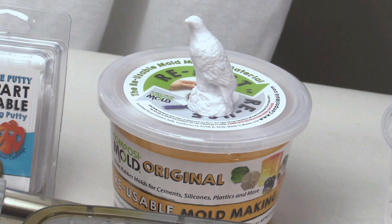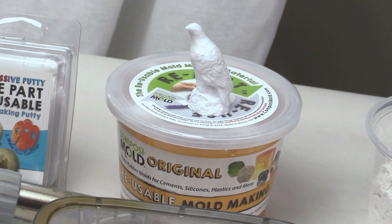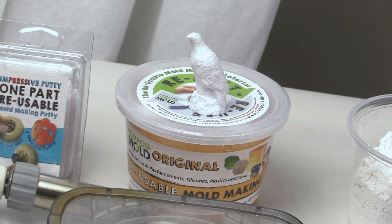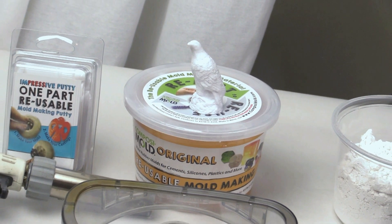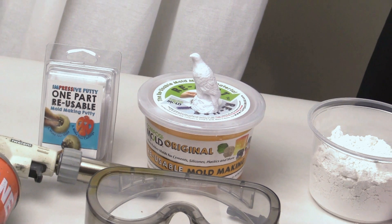The ComposiMold is a heat and pour mold making material that will pick up great details simply by pouring it around your object. For the ComposiMold use either the ComposiMold original or the ComposiMold flex so you can bend the rubber mold around the wax without causing damage.